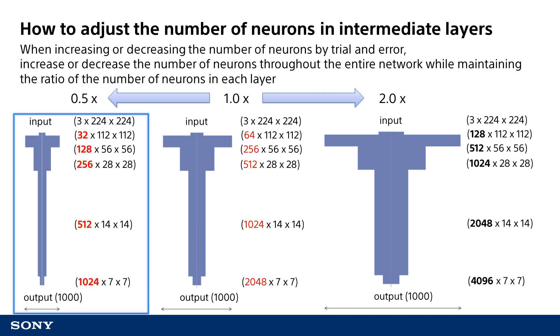In the opposite case as well, you can conduct training from a state that has been optimized to a certain degree by cutting the number of neurons in each layer in half, for example.